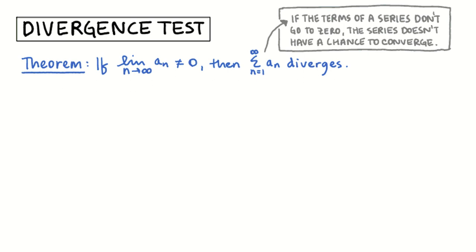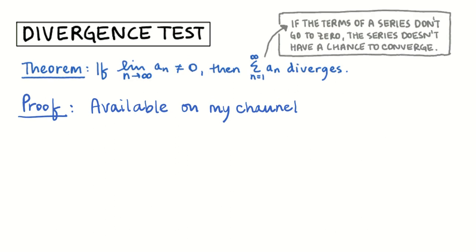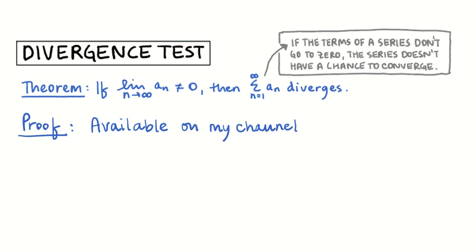What I just showed you is really just a case of using the Divergence Test. The Divergence Test is a theorem that says if the limit of the terms of a series is not zero, then that series for sure diverges. In plain English: if the terms of a series aren't going to zero, the series itself doesn't have a chance to converge. If our infinite series was going to add up to a finite number, we'd have to get closer and closer to adding zero to our total. I'm going to record the proof in a separate video and put the link up there.